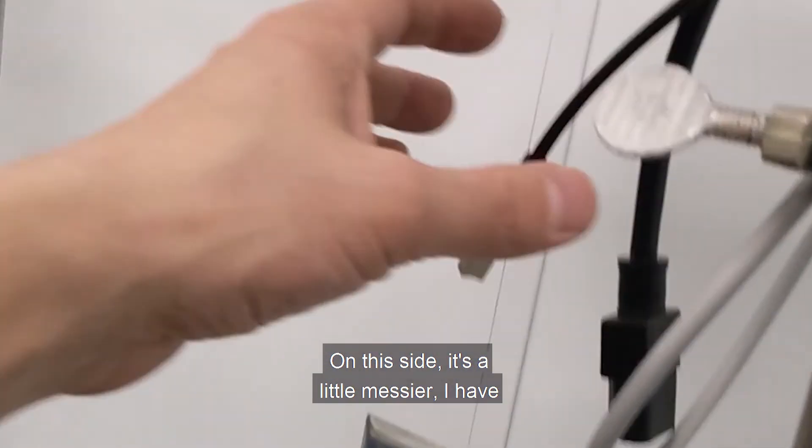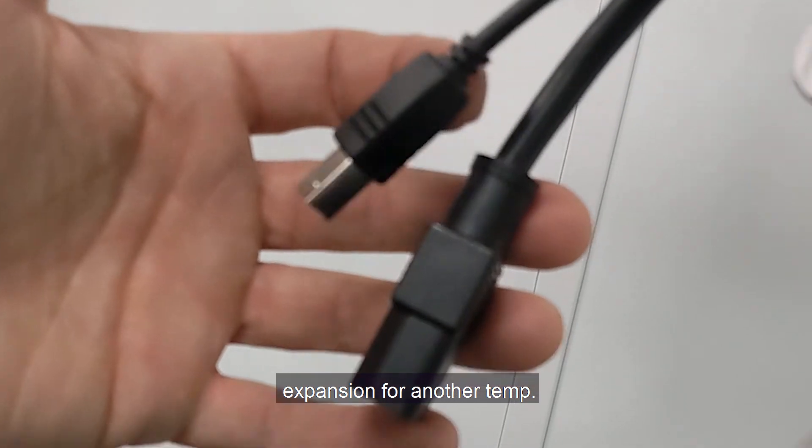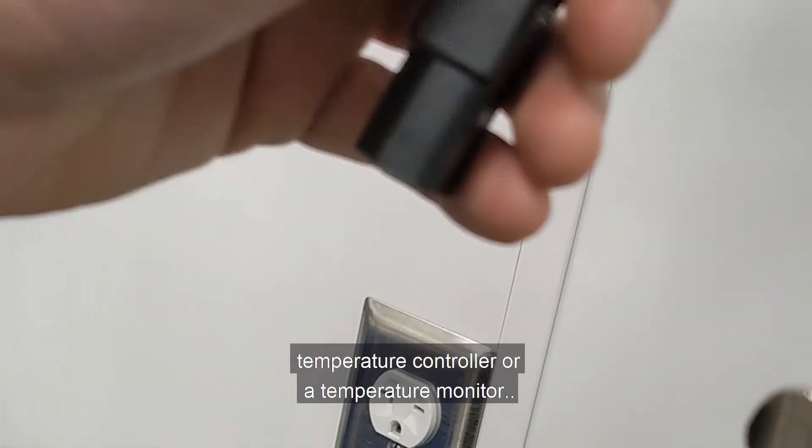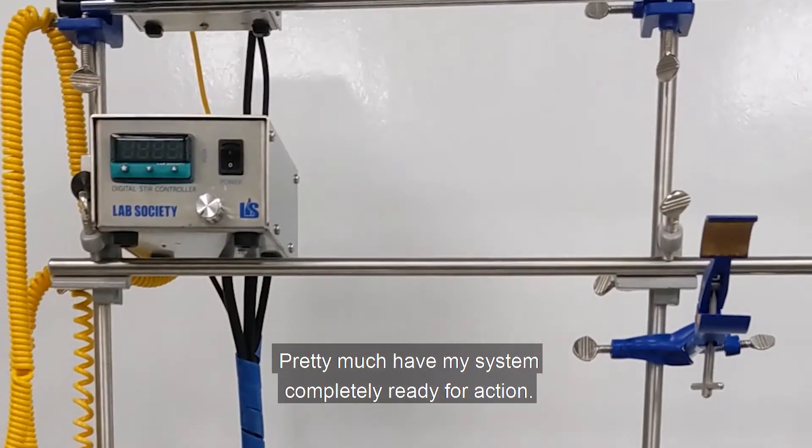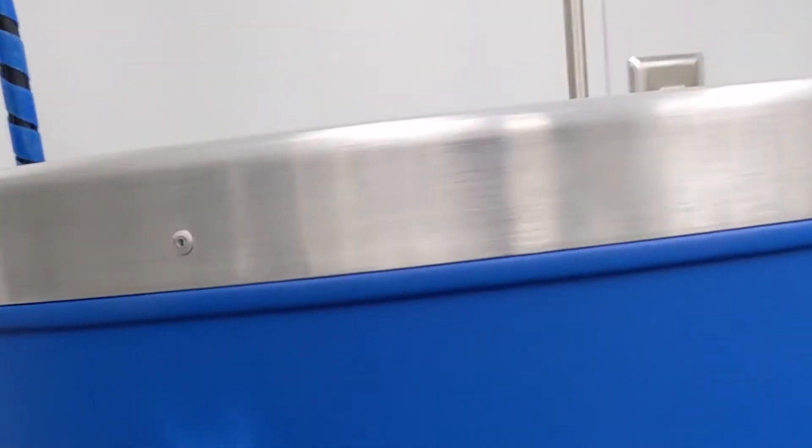On this side, it's a little messier. I have expansion for another temp controller if I'd like, so either a dual-channel temperature controller or a temperature monitor. All the USBs are both right here and then across the table. Pretty much have my system completely ready for action.